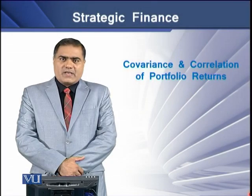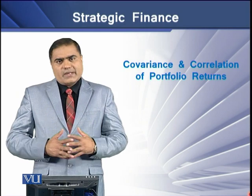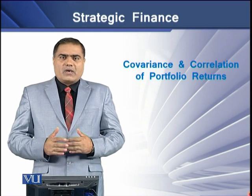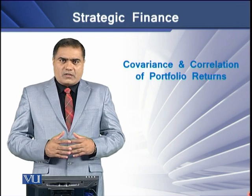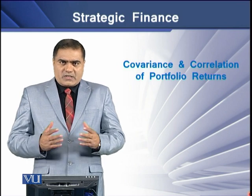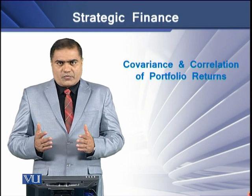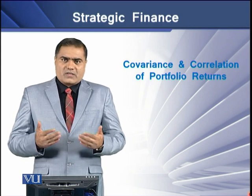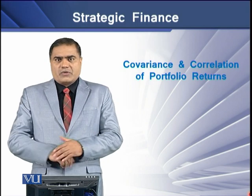Covariance and correlation are the two statistical measures used to determine a directional relationship between the return series of two individual assets in a portfolio, and the strength of this relationship between these two individual assets.